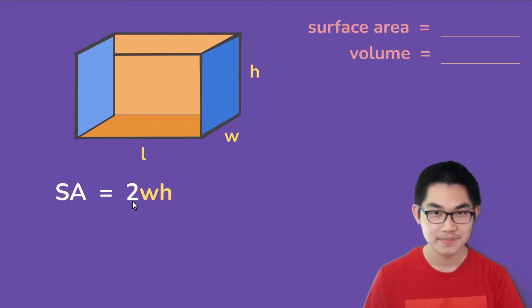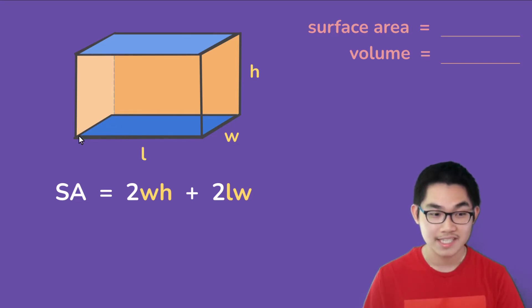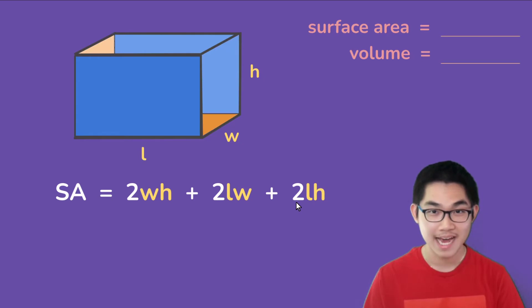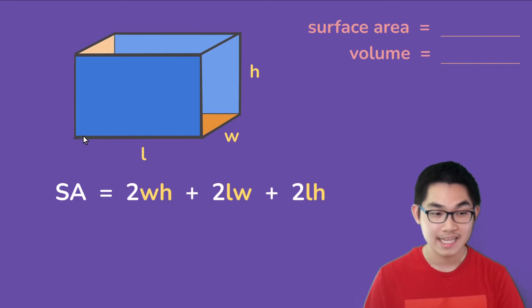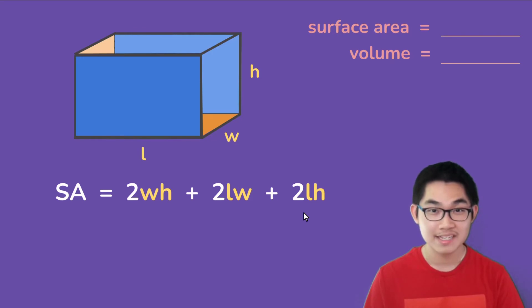Since there are two of them, we need to multiply by two. The next two sides are these two, and they are the same — the area of this side is the length times the width, and because there are two of them we multiply by two. The last pair of sides: the area is the length times the height, and since there are two of them we multiply by two. That is the formula to find the surface area of the rectangular prism.